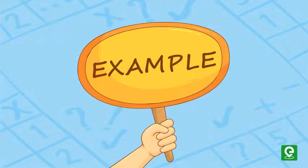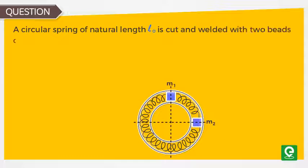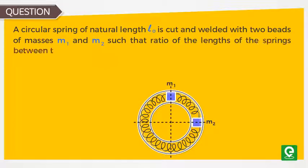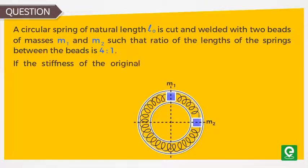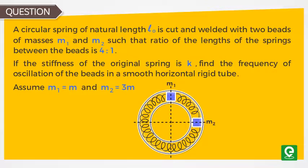Let's take an example to understand the application of this concept. Question: A circular spring of natural length l₀ is cut and welded with two beads of masses m1 and m2 such that the ratio of the lengths of the springs between the beads is 4:1. If the stiffness of the original spring is k, find the frequency of oscillation of the beads in a smooth horizontal rigid tube. Assume m1 = m and m2 = 3m.